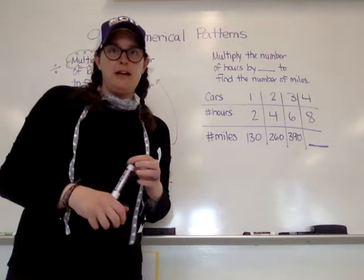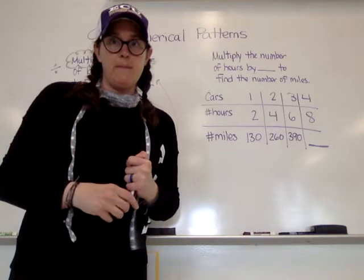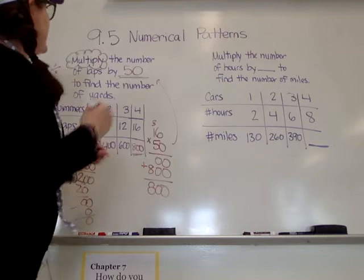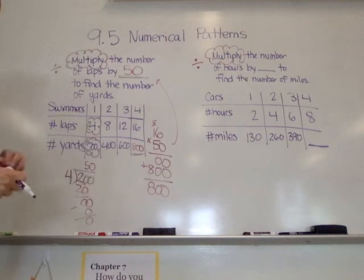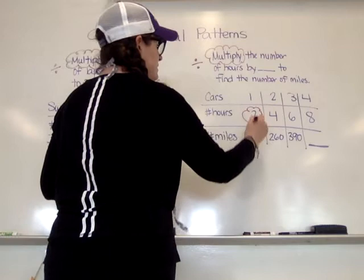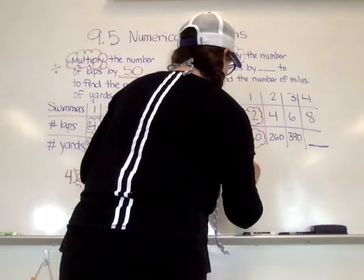Now we're looking at the second problem: multiply the number of hours by blank to find the number of miles. So we're talking about cars — the number of hours it took them to drive a certain number of miles, so distance. Again, it's telling us to multiply, and the opposite of multiply is divide, so we're going to divide. We're taking the smallest number set — always use the smallest numbers because it's easiest. So, 2 into 130.